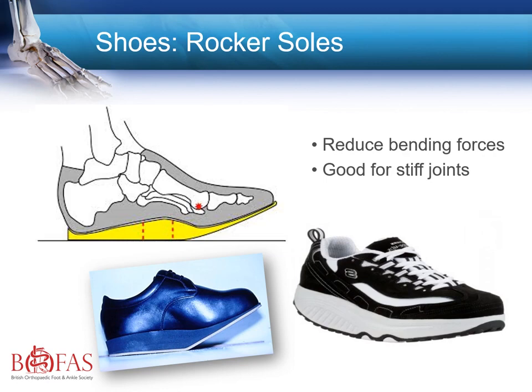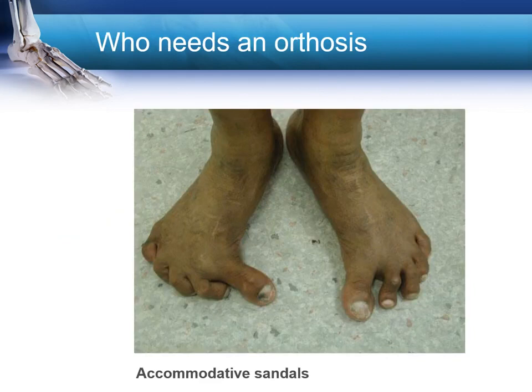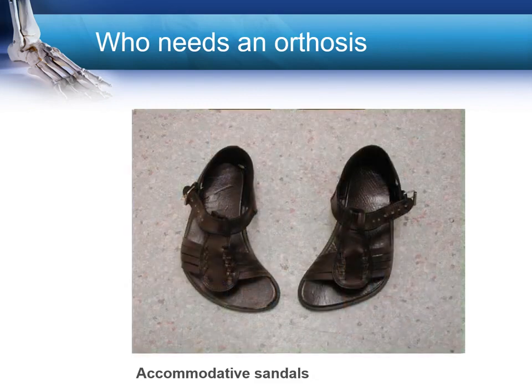The rocker is placed towards the midfoot, and popular choices include fit flops or MBT sandals, which provide a little forefoot rocker to alleviate forefoot discomfort. On the outside of a sole you can also add extra wedges and flares to alter the ground reaction force, as seen in the example of a lateral flare. Depending on culture and weather conditions, even patients with the most extreme deformities may be suitably managed with accommodative sandals.